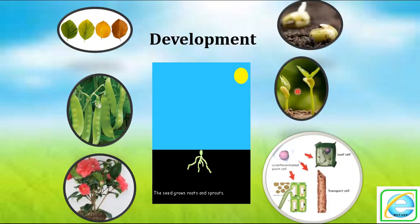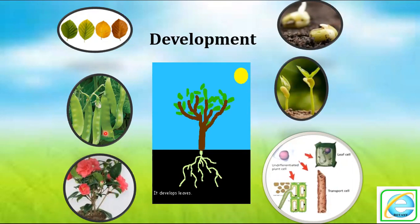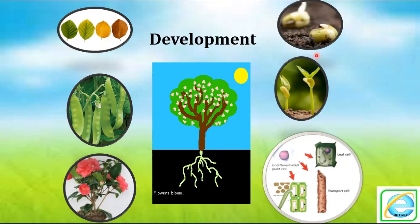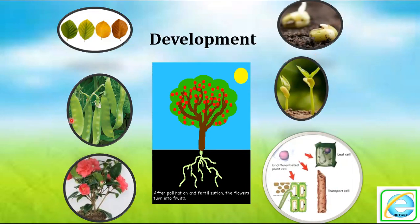So development is the sequential process of seed germination, differentiation of the cell, cell expansion, flower formation, seed formation, fruit formation, and senescence. This overall is what we call development.